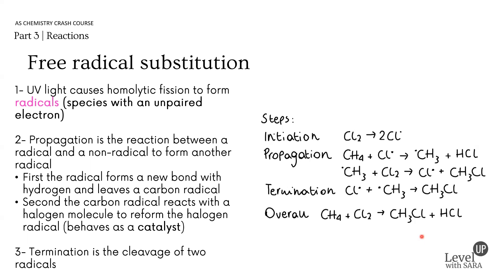But how did this substitution occur? Through a radical. This is to do with one particular property of halogens: when they're exposed to UV light, homolytic fission occurs and radicals are formed. This first step is called initiation — the chlorine splits to form two chlorine radicals.